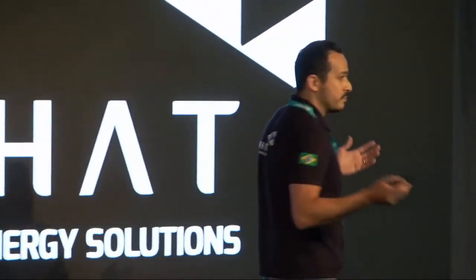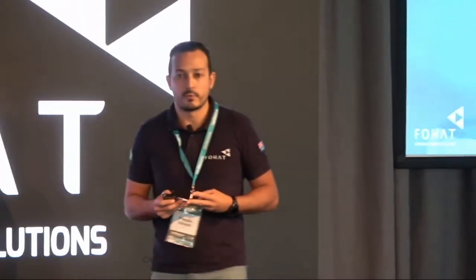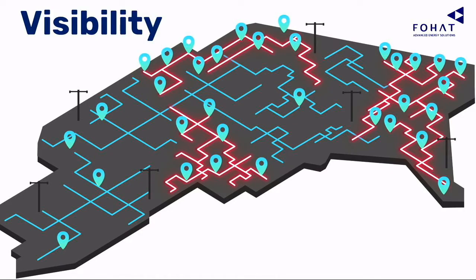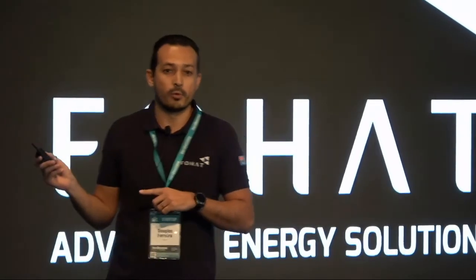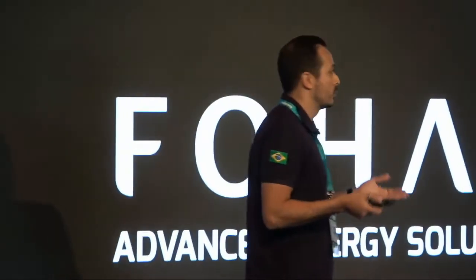So now we have this big dilemma: on one side, the amount of solar systems; on the other side, the constraints it generates. We see that three things need to be done. First, visibility — we need visibility to see where network constraints are and where the concentration of solar systems is, so we can incentivize people with solar systems to install more batteries or storage systems. Storage systems can help balance the energy in the network.